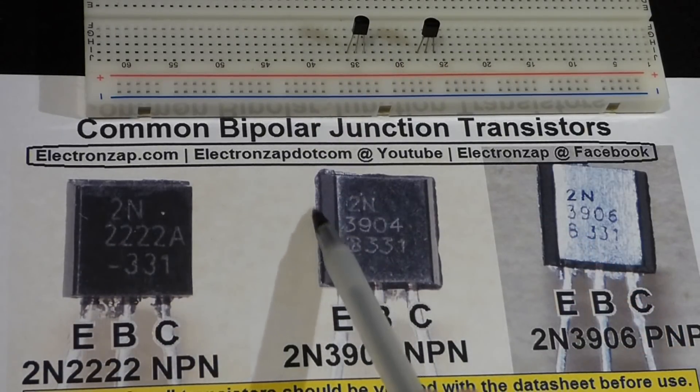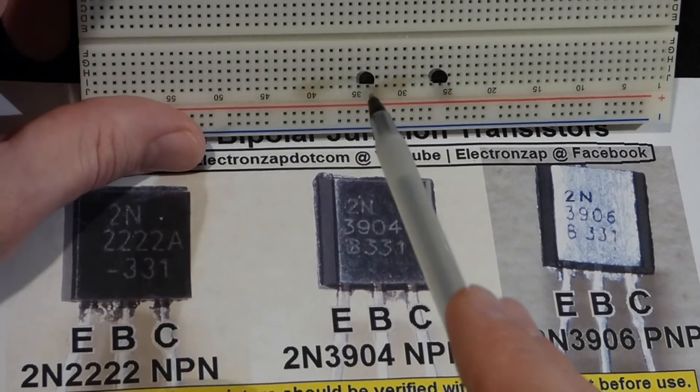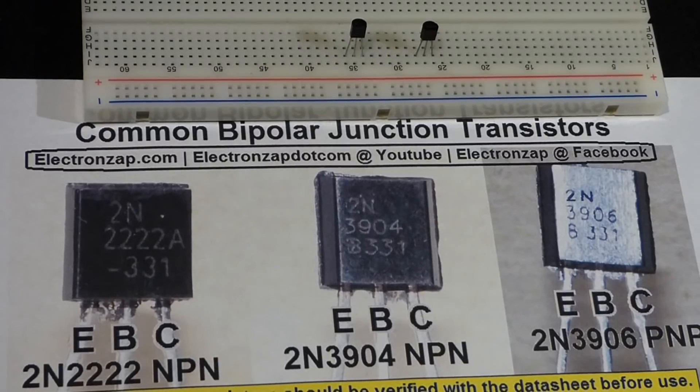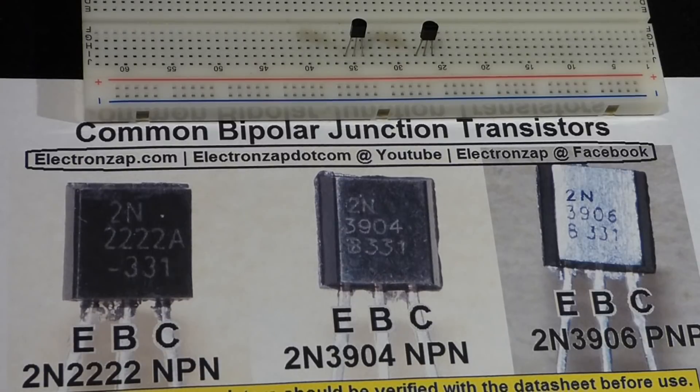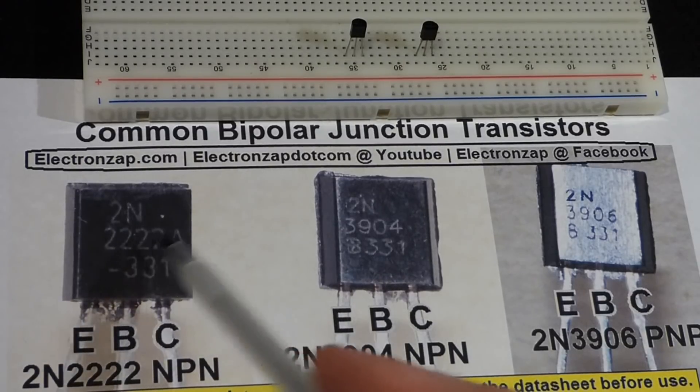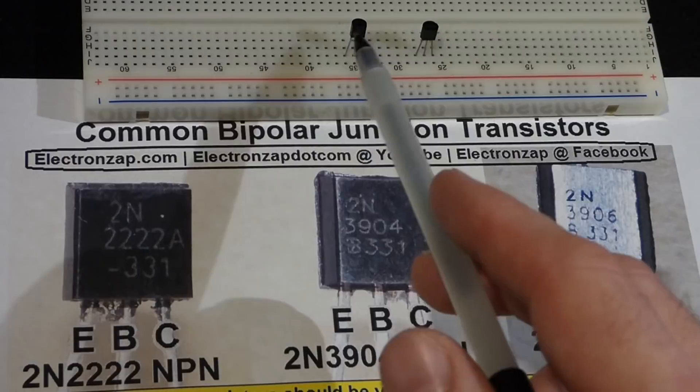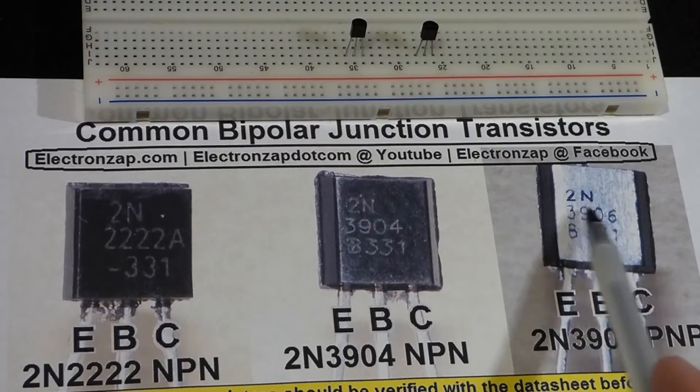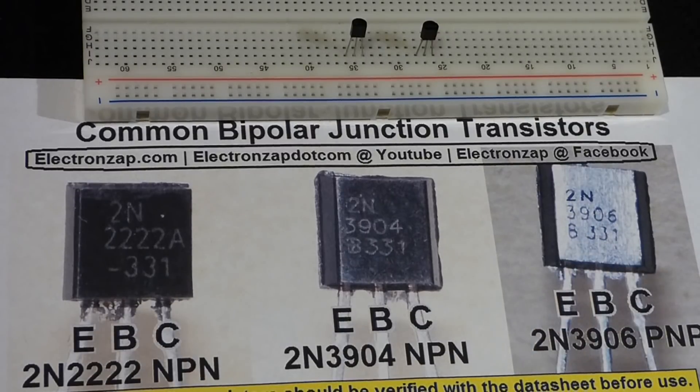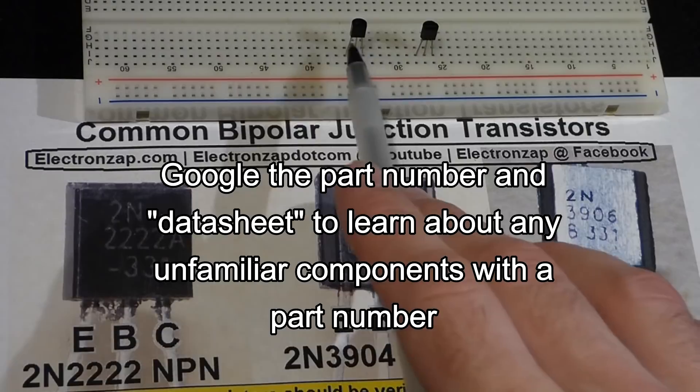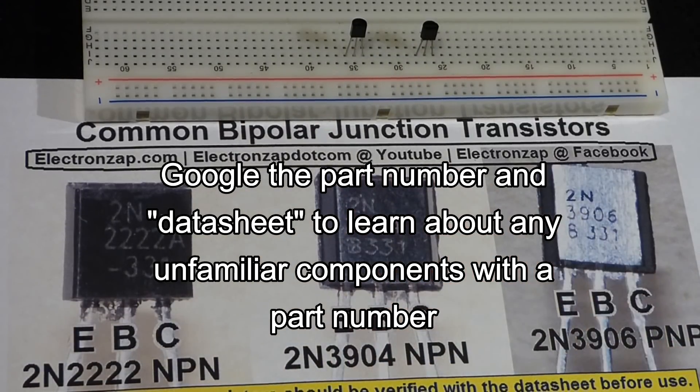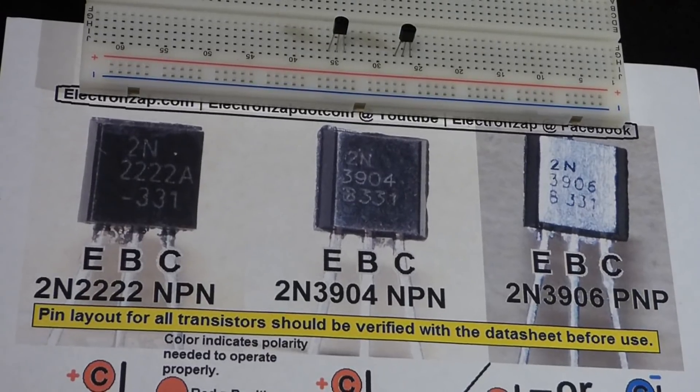It's flat on one side and then round on the other side. So these are round up here and then flat right there. That's the TO-92 package. The package doesn't tell you anything about the transistor. You got to look at what's written on there. These two happen to be a 2N3904 and then that one's a 2N3906. If you're unaware of what a component that looks like this is, you got to look up the part number and look up its datasheet.